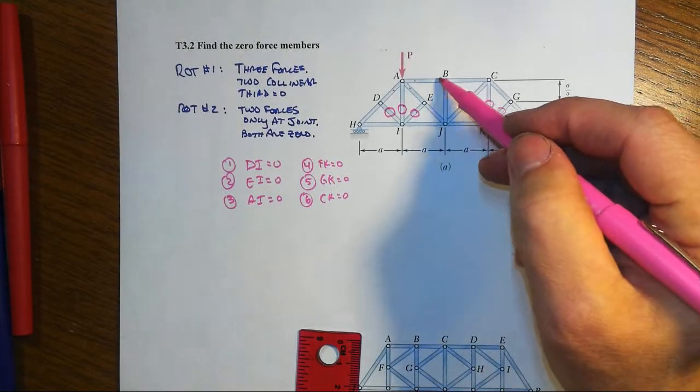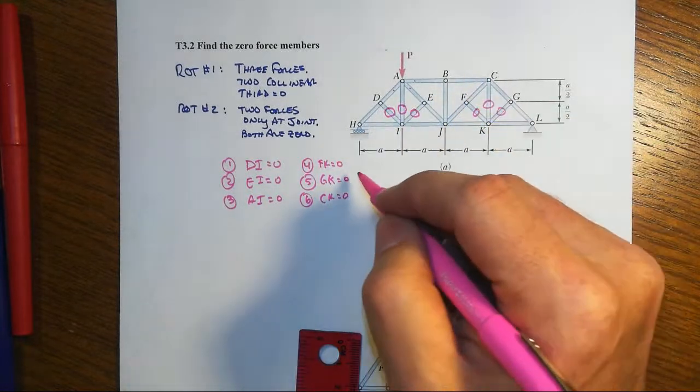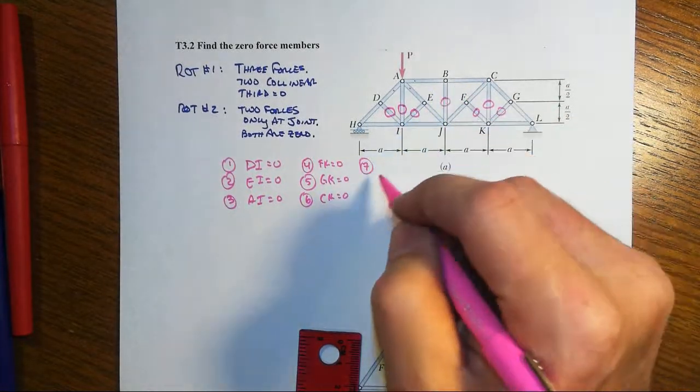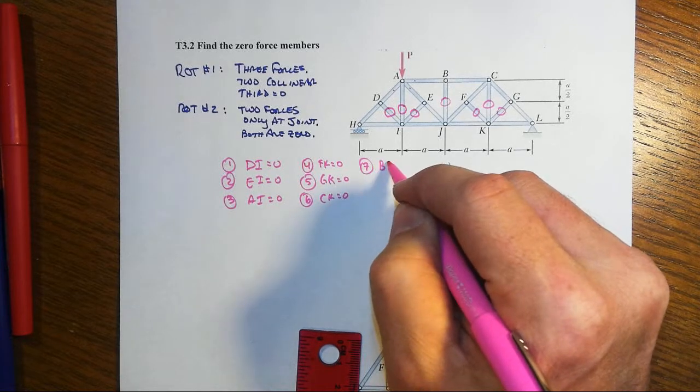And one more here, because look at this big T joint up here at B, then we've got a T joint, and therefore BJ is also zero.